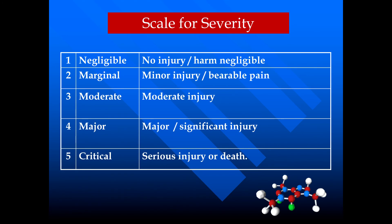Here is the scale for severity. If severity is negligible, we rate it as 1. If it is marginal, we rate it as 2. If it is moderate, we rate it as 3. If it is major or can cause significant injury, we rate it as 4. If it is very critical, we rate it as 5. This is how we rate the different degrees of severity.